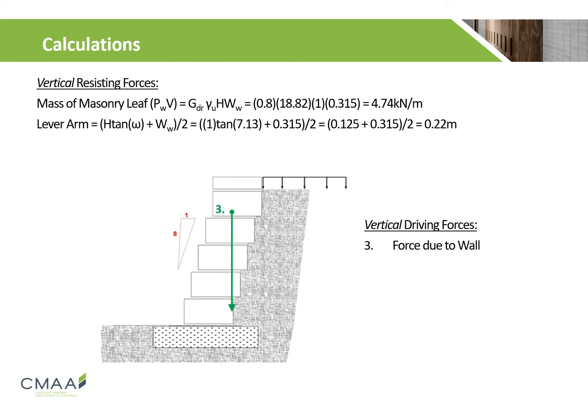Similarly to our horizontal driving force calculations, the vertical resisting forces need to be calculated to determine if our wall is designed adequately. Following the equation, we get a resisting force due to the mass of the wall of 4.74 kN per meter. We also need to calculate the lever arm for overturning moments, which takes into account the unit batter, giving us a value of 0.22 m.